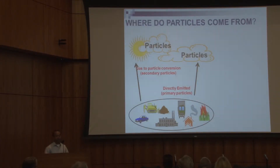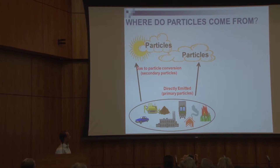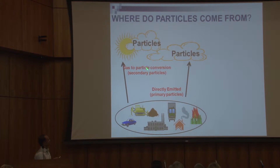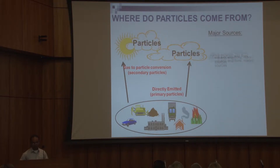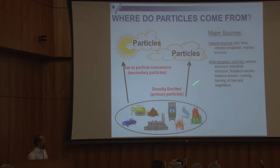So where do fine particles come from? They can either be directly emitted from various sources — known as primary particles — or converted from gas to particle, known as secondary particles. In terms of major sources, natural sources include all types of combustion: wildfire, volcanic eruptions, as well as marine sources. Anthropogenic sources include vehicle emission, industrial emission, fire smoke, tobacco smoke, cooking, burning of fuel, and vegetation. All of these are major sources of fine particulate matter.